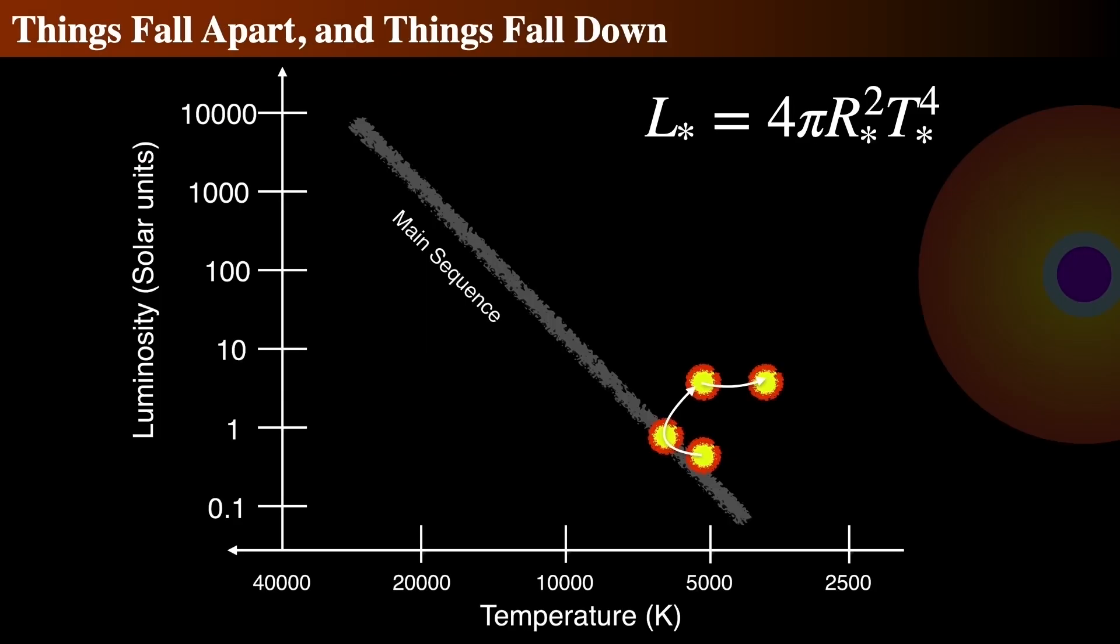For these next 1.5 billion years, the sun is now what's called a sub-giant star. It expands radially in size, keeping a near-constant luminosity of about 2.2 solar luminosities and inches towards the base of the red giant branch.